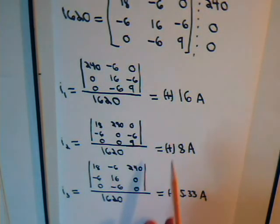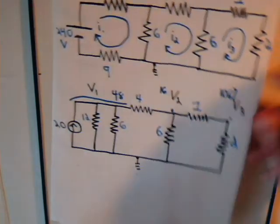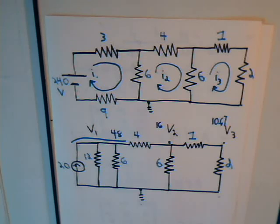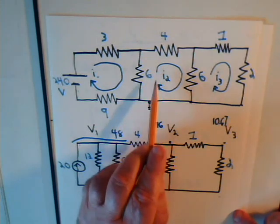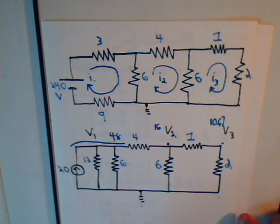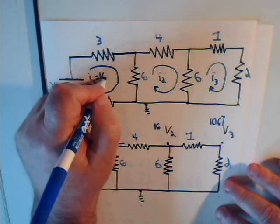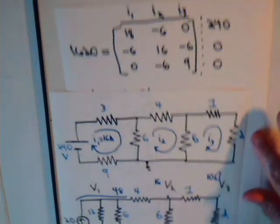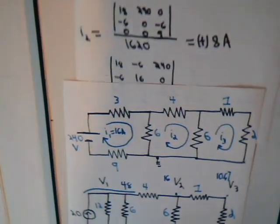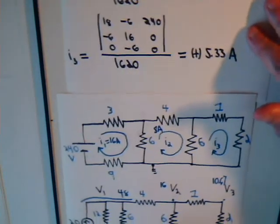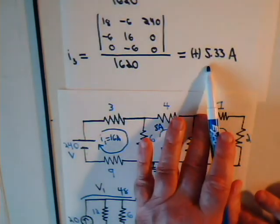The positive signs confirm that our assumed clockwise mesh current directions are correct — all three currents are indeed flowing clockwise. So I1 equals 16 amps, I2 equals 8 amps, and I3 equals 5 and one-third amps.